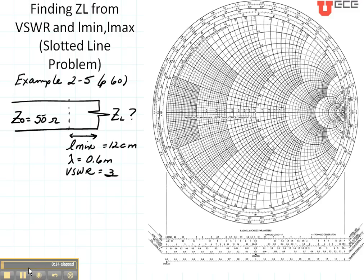This is a problem where you are given the location of the voltage minimum is 12 centimeters. The voltage standing wave ratio is 3, and you want to find the load impedance.